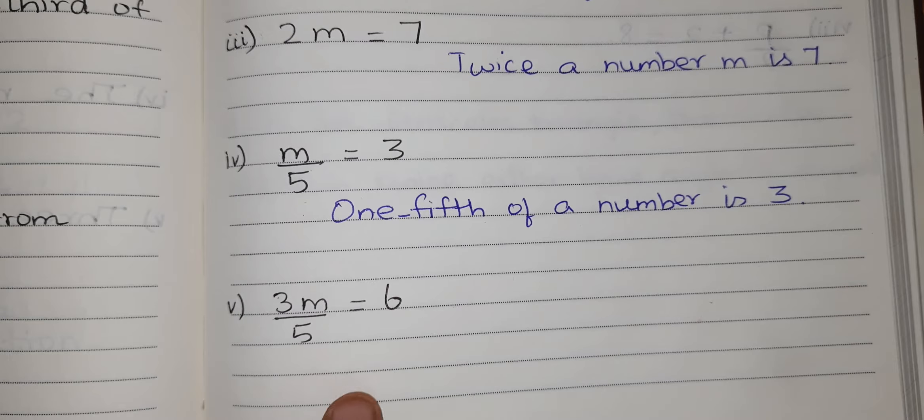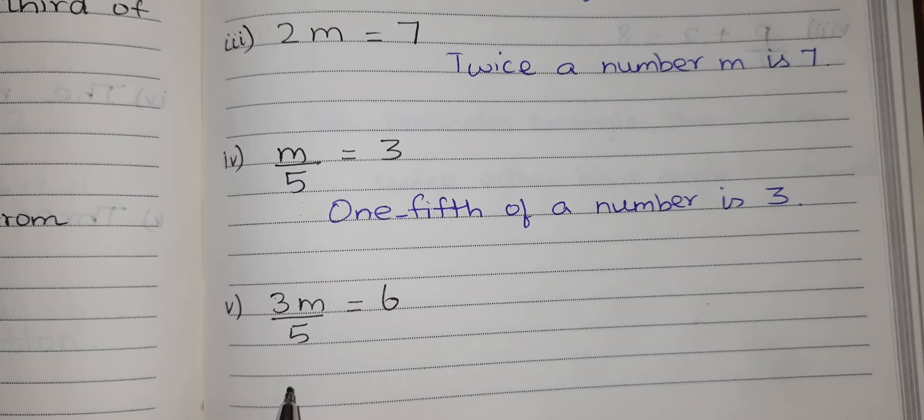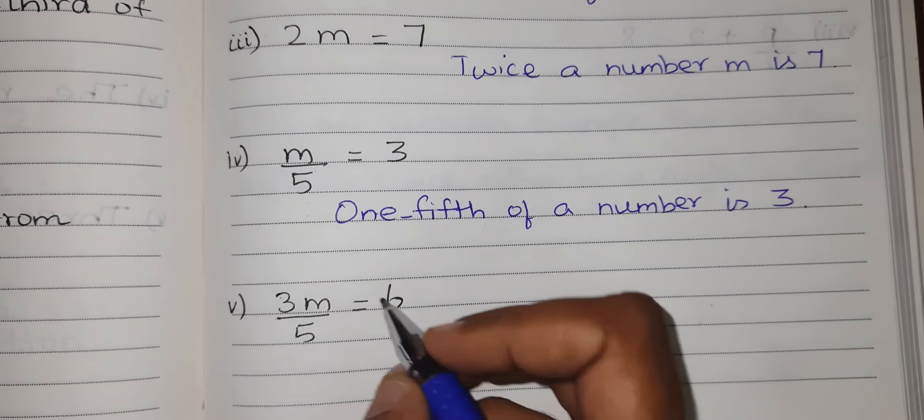3m by 5 equal to 6. It means 3 by 5 means three-fifths. So three-fifths of m is 6.